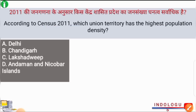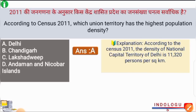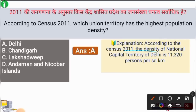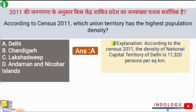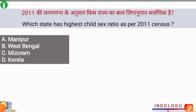Next question: according to the census of 2011, which union territory has the highest population density? The correct answer is option A — Delhi. The density of the National Capital Territory of India, Delhi, is 11,320 persons per square kilometer.